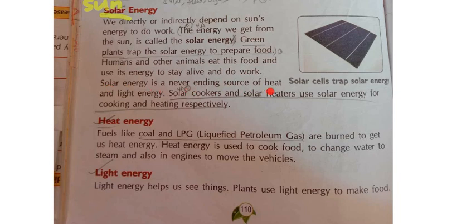Solar energy is a never-ending source of heat and light energy. That means the sun will never stop rising or setting. Daily the sun will be rising and daily the sun will be setting. After 100 years we may not be there, but our future generations will be there and they also will be getting energy from the sun - heat energy and light energy. So this solar energy, where is it used? Applications: solar cookers and solar heaters use solar energy for cooking and heating respectively. Solar cells trap the solar energy - these solar cells will be dragging the sun's energy from the sun.